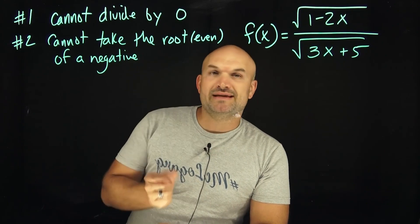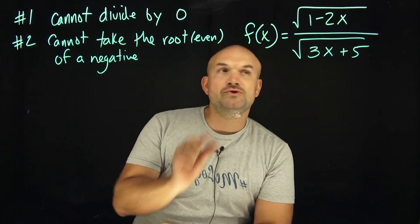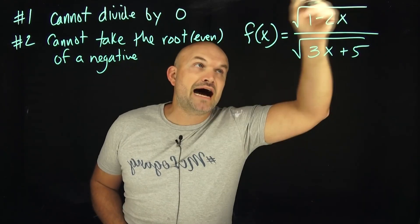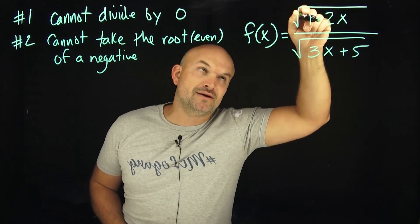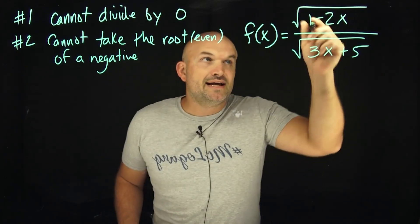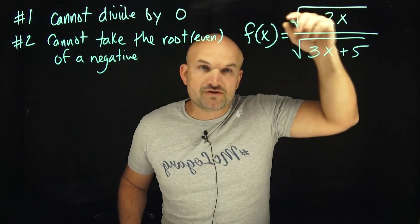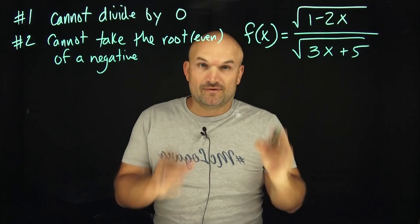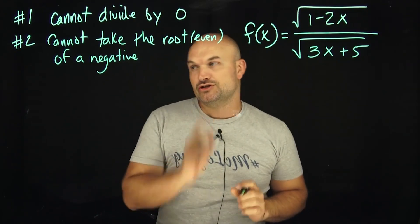The simple little trick is we can combine two of those restrictions together. For the first top numerator, there's really nothing we can combine. We can just say whatever's under this radical has to be greater than or equal to zero. That is one restriction on the domain.